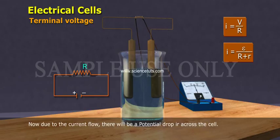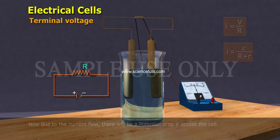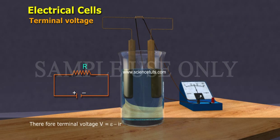Now due to the current flow, there will be a potential drop I r across the cell. Therefore, terminal voltage V equals epsilon minus I r.